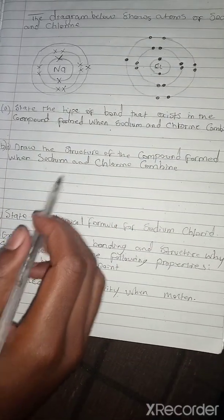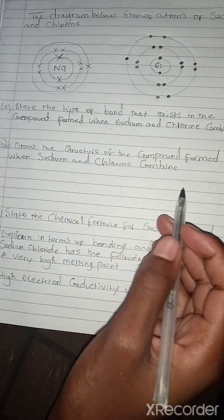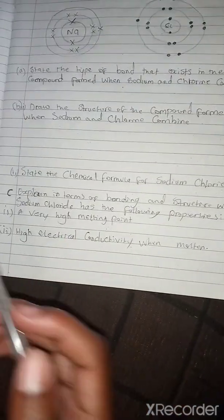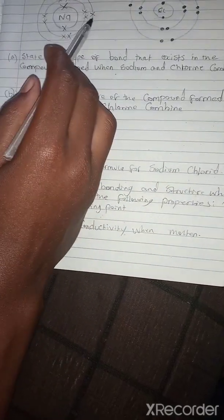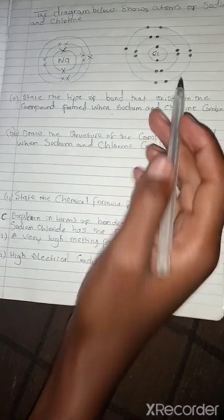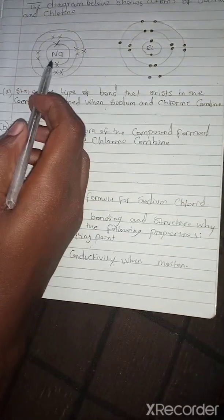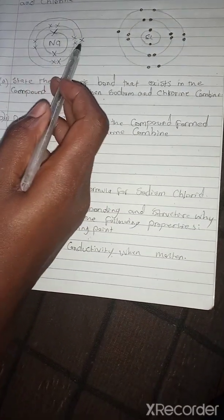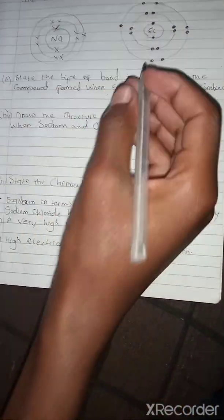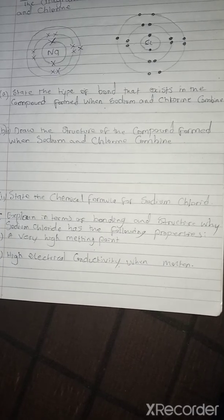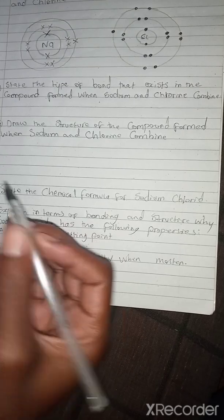In ionic bonding, metals lose electrons and non-metals gain electrons. So sodium is going to lose its electron from its outer shell, and chlorine is going to gain it, so that both achieve stability. The structure shows sodium losing its electron and chlorine gaining it.